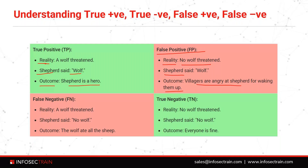Then we have false negative: in reality there was a wolf, but Shefford started shouting 'no wolf, no wolf, no wolf.' The outcome is the wolf ate all the sheep.